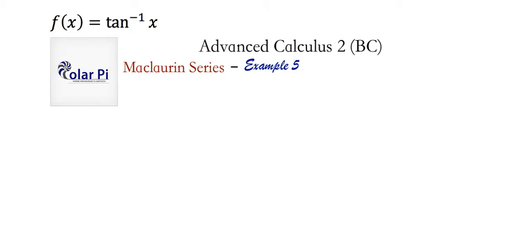Now recall that tan inverse of x has a nice first derivative. It's equal to 1 divided by 1 plus x squared. So if you watched example 4, then you will know how we're going to start our solution here, which is with the infinite geometric series, which we know converges when the absolute value of x is less than 1, and we know that it converges to 1 divided by 1 minus x.